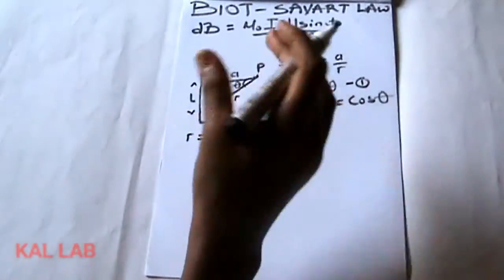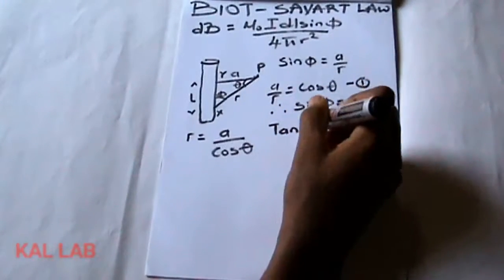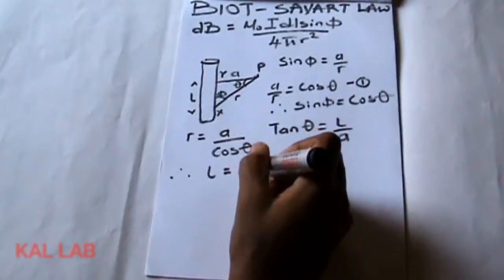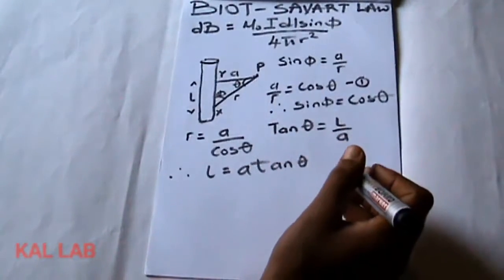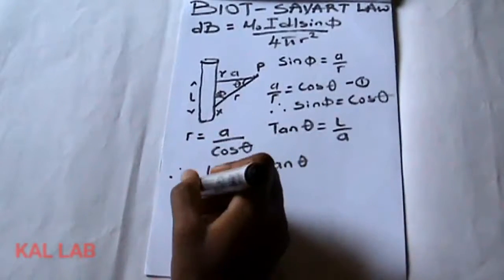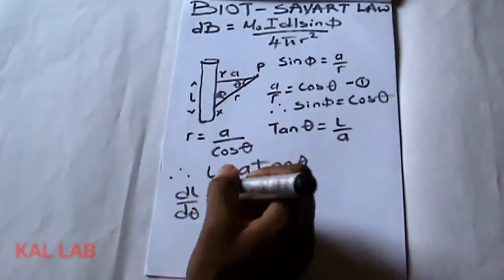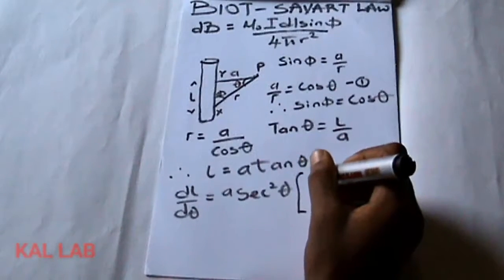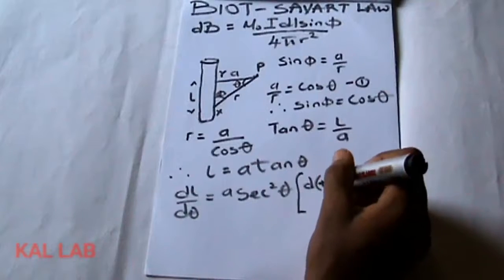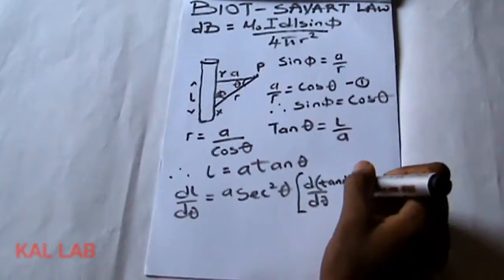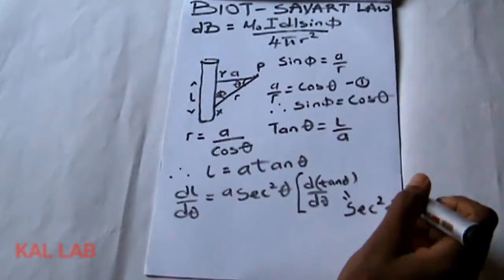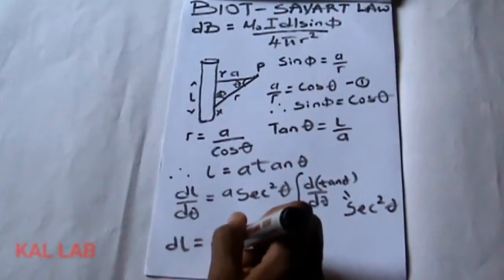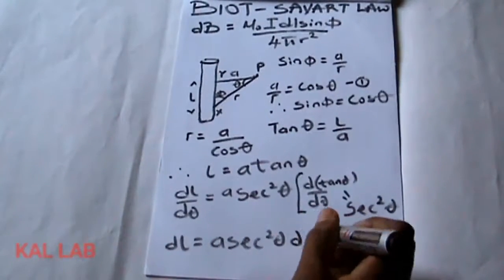From our diagram we can also tell that tanθ is equal to l over a, so therefore l is equal to a·tanθ. In calculus, if we differentiate both sides, dl/dθ leads to a·sec²θ. This is because the derivative of tanθ gives sec²θ, so dl is equal to a·sec²θ·dθ.